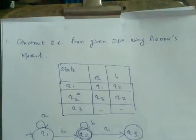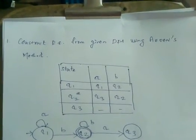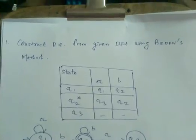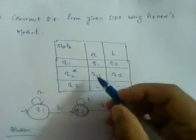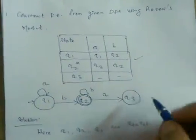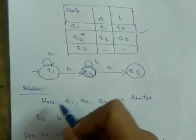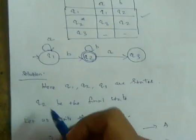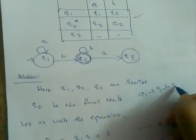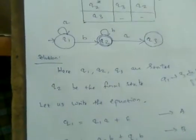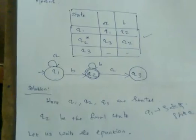We are going to find a regular expression from a given DFA using Arden's method. For a given transition table we are going to construct an automatic solution. We have states q1, q2, q3, where q2 is the final state and q1 is the starting state. Now we are going to write the equations for the states q1, q2, q3.